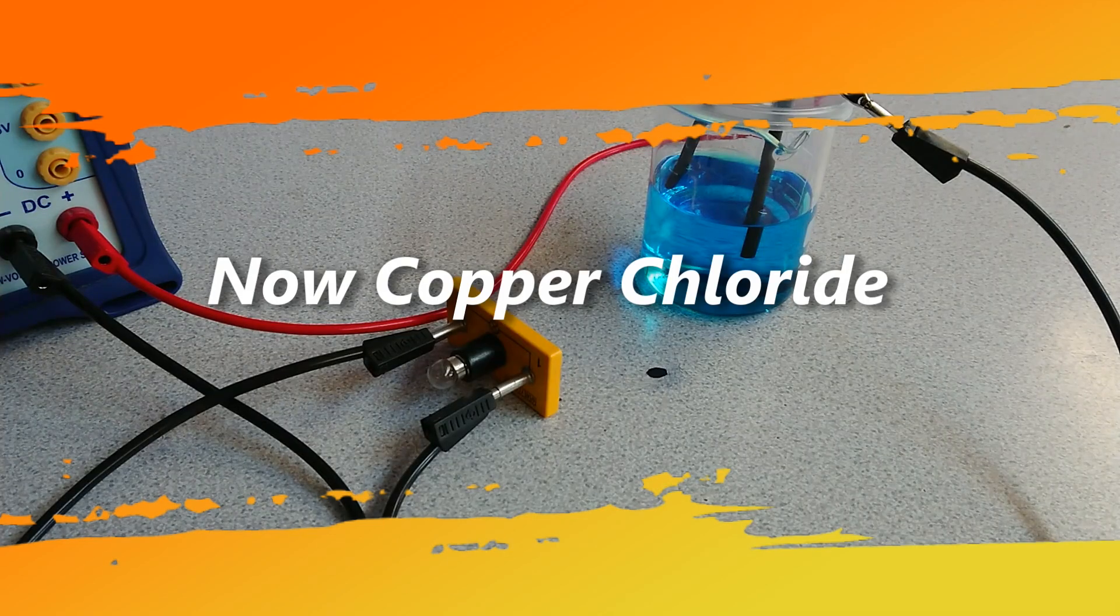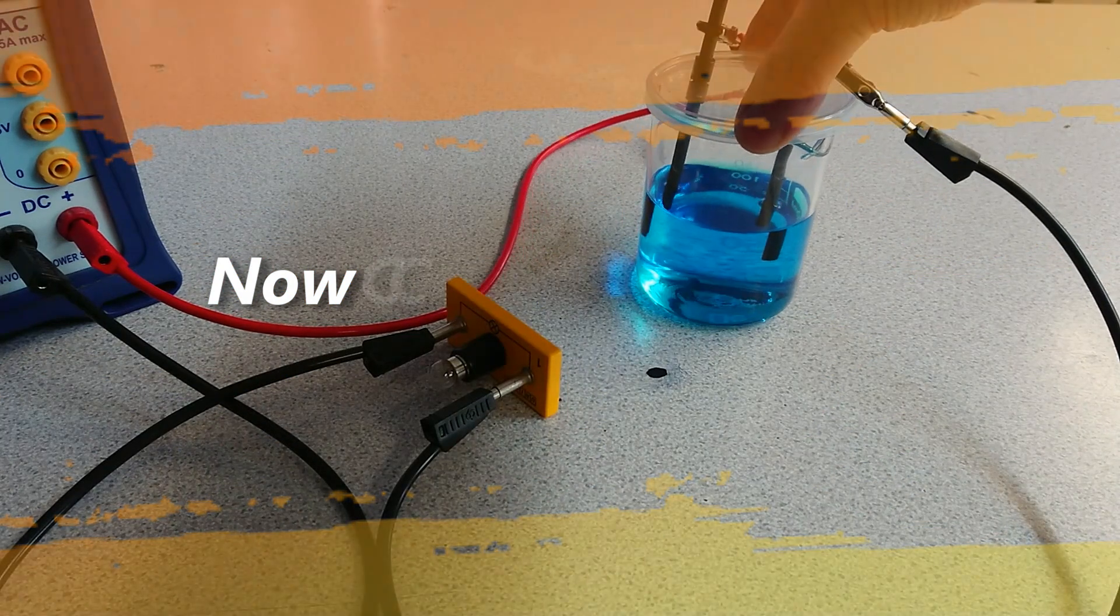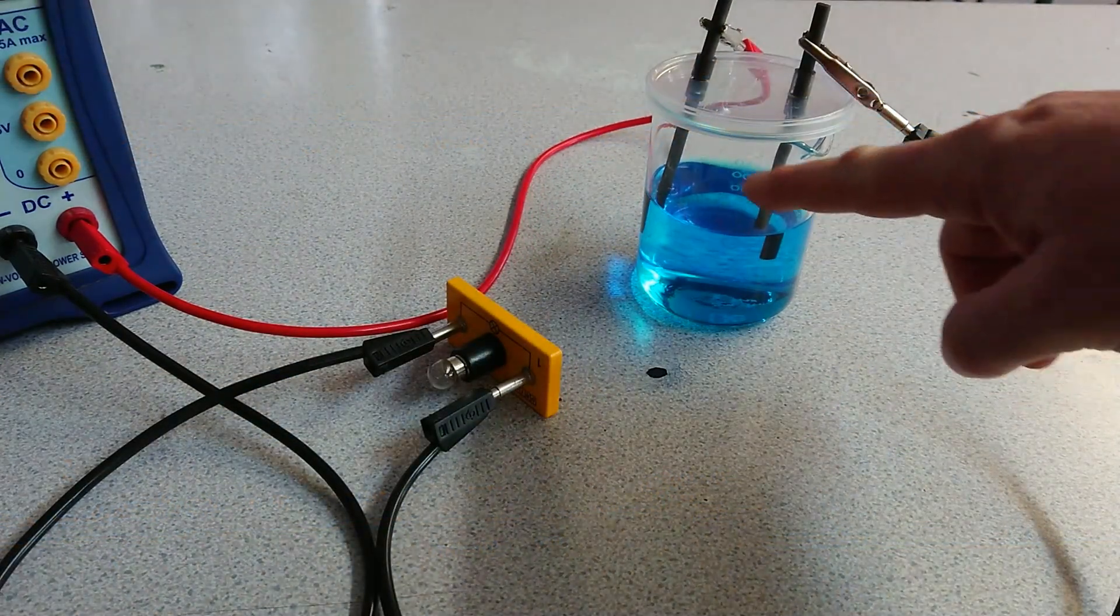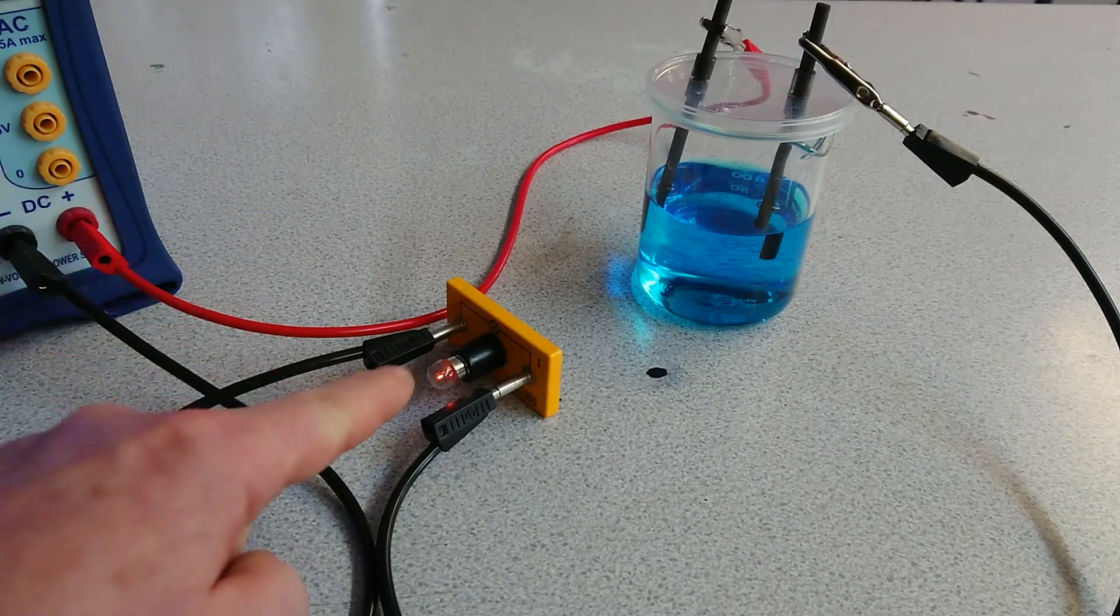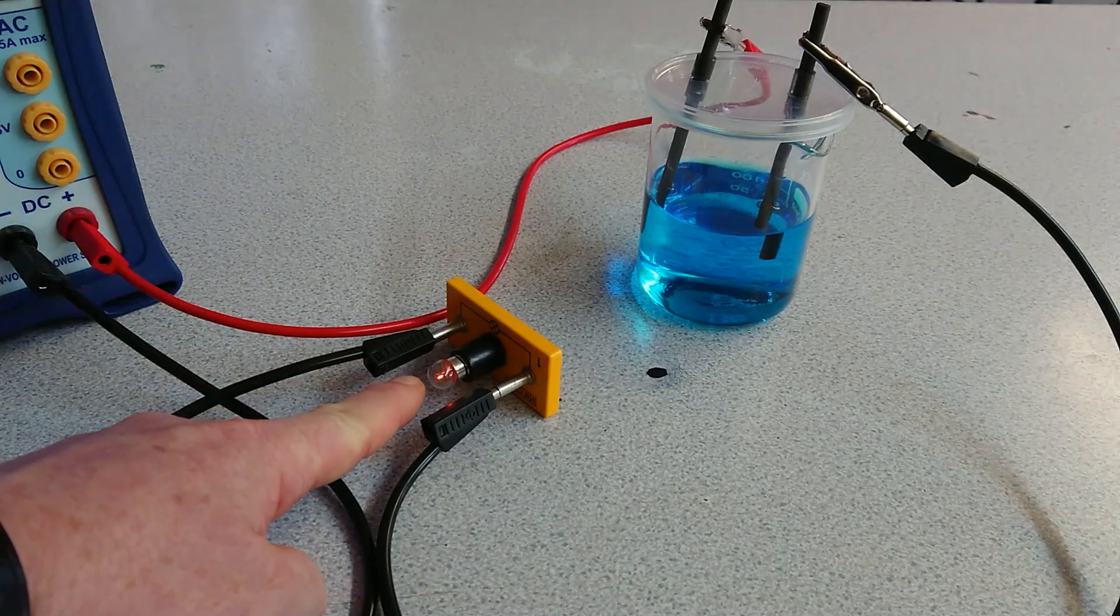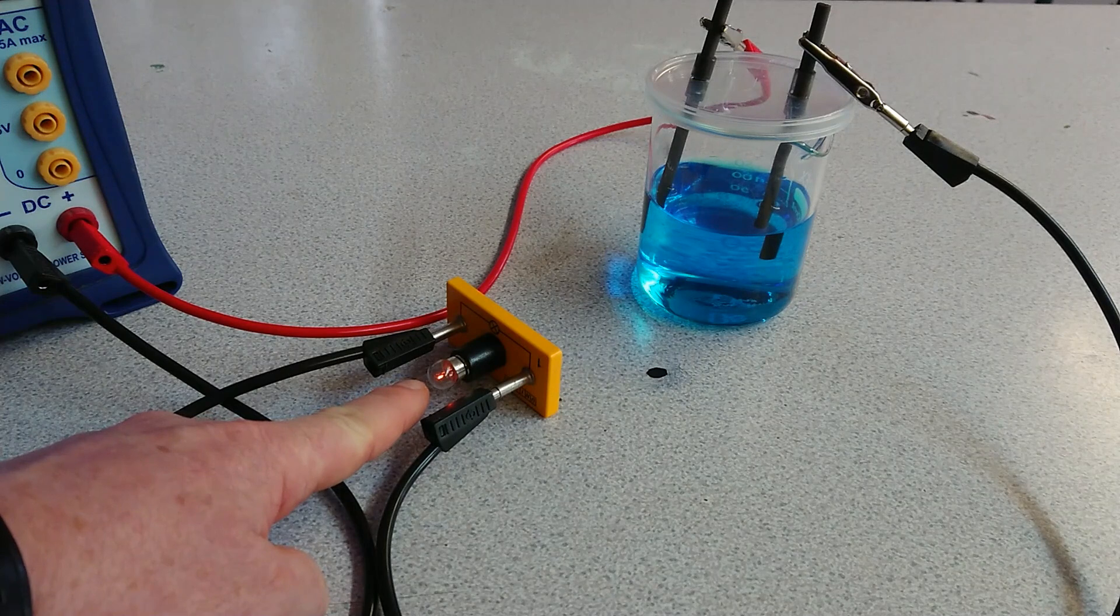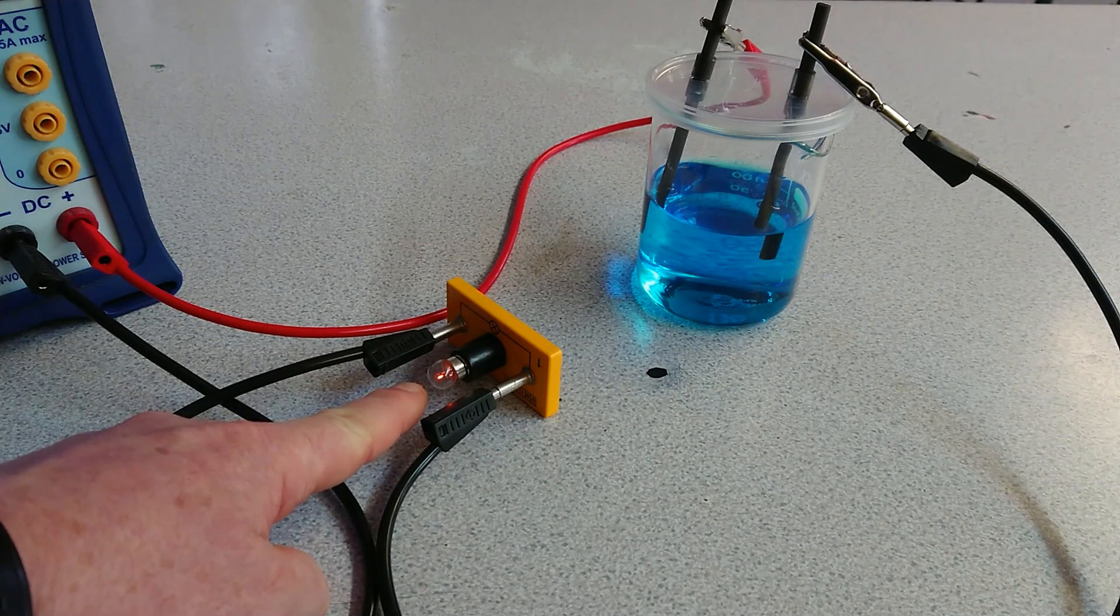We've now added our copper chloride solution into the beaker. We can see that the electrodes aren't touching; they're well apart from each other. If we turn the power supply on now, we can see that we've got a small current flow as signified by the lamp coming on.